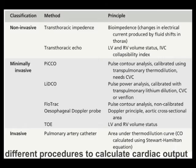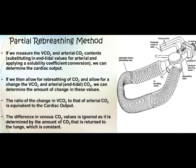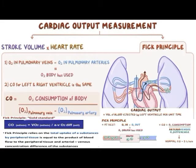Partial gas rebreathing, also known as the NICO system, uses a partial gas rebreathing monitor and the indirect Fick principle to calculate cardiac output. It is used in intubated patients under mechanical ventilation. Adolph Eugene Fick in 1870 first described measuring cardiac output in humans by calculating that the total uptake or release of oxygen by the lungs is the product of blood flow through the lungs and the difference in arterial and venous oxygen content.